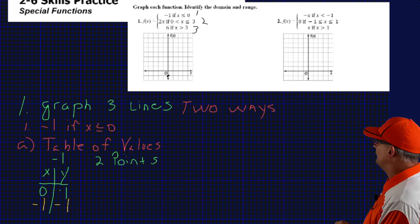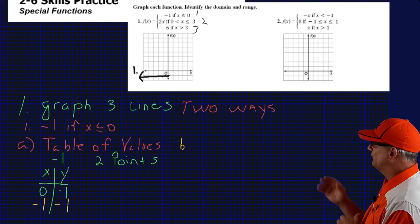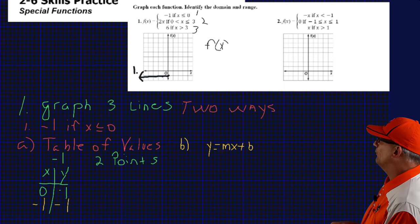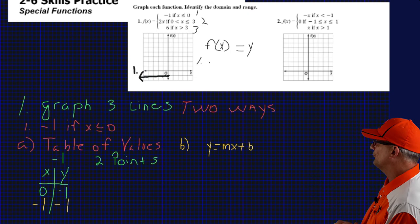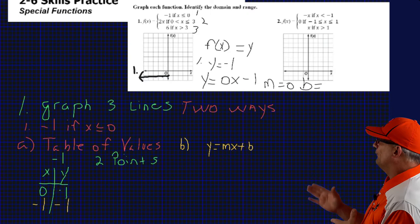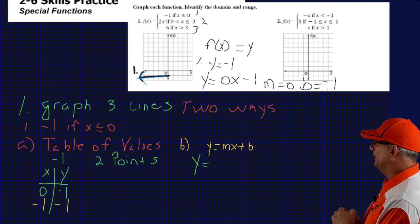If we use a table of values for the first one, y equals negative 1 — no matter what I pick for x, y is going to be negative 1. We're going to start with 0 because that's what they give us. They want us to go less than 0, so the next digit less than 0 is negative 1. We plot those two points, look at the inequality — it wants less than or equal to 0. So at 0 we put a closed circle and draw a line to the left, extending to negative infinity.